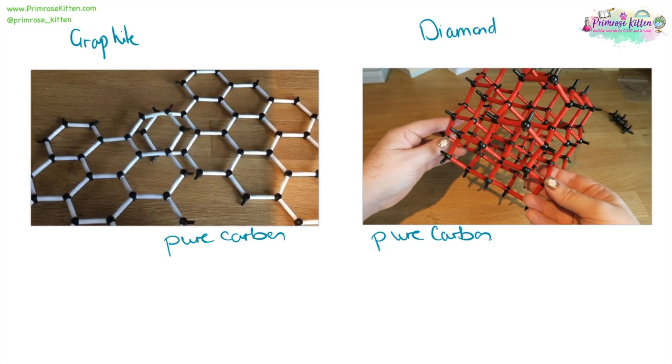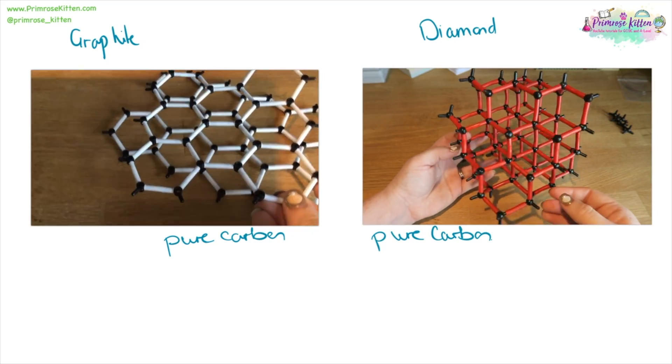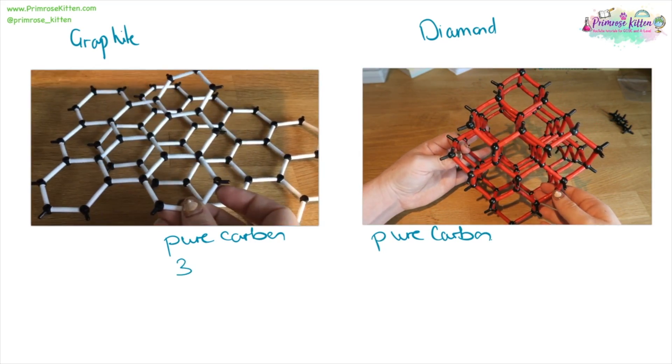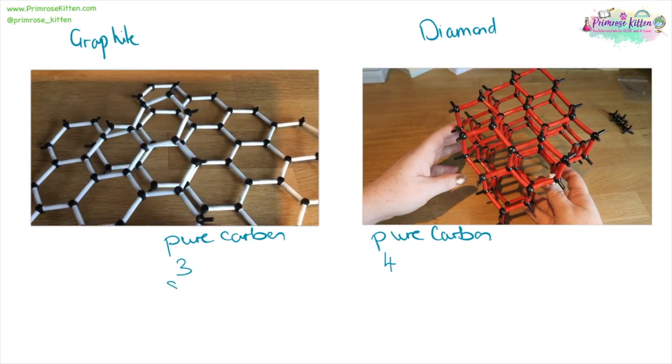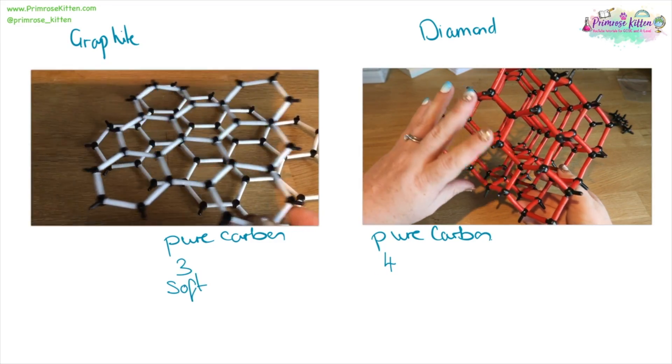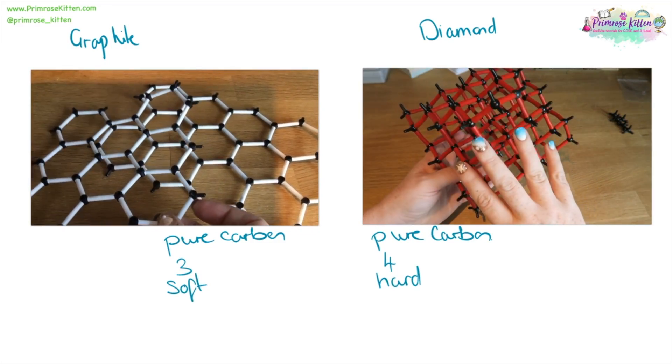If we were to compare diamond and graphite they are both made of pure carbon. Graphite is made of three carbon-carbon bonds. Diamond is made of four carbon-carbon bonds. Graphite is soft. Diamond is hard.